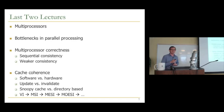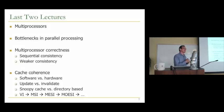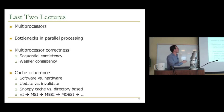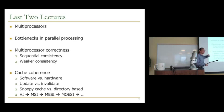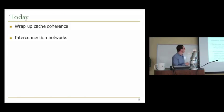So let's jump into the lecture. Last two lectures, we've started multiprocessors. We talked about bottlenecks and parallel processing — there was a bonus question on that on the exam, on Amdahl's law mainly. We talked about multiprocessor correctness, sequential consistency and weaker consistency models. And we talked about cache coherence, which you'll be implementing.